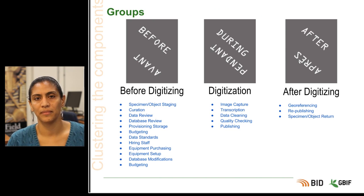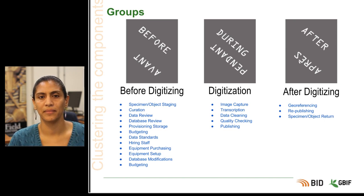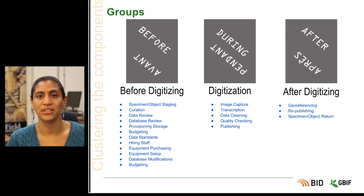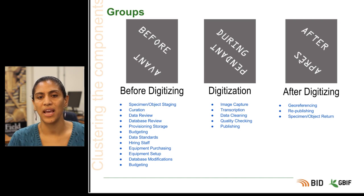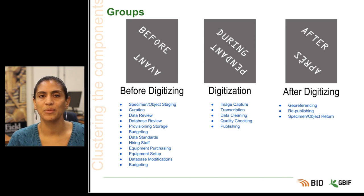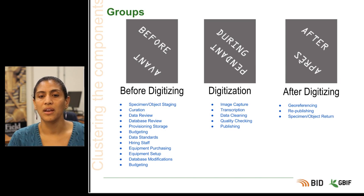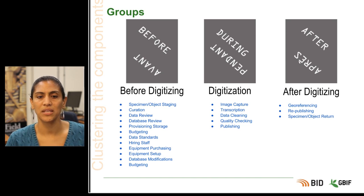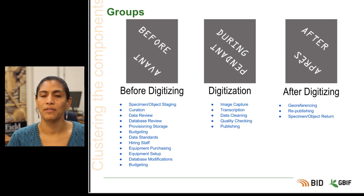Let's first look at groups. Probably the most important grouping to identify in your project is stage — this is the when of your project. The simplest stage grouping uses digitisation as its reference points: before refers to any time before the start of the digitisation effort itself, during relates to the period of active digitisation, and after is the period after digitisation has ceased. Another common grouping uses the start and end time of funding as its reference points. You can use anything that makes sense, and be aware that you may use different groupings for different stakeholders.